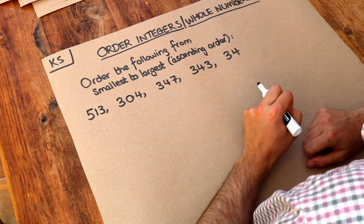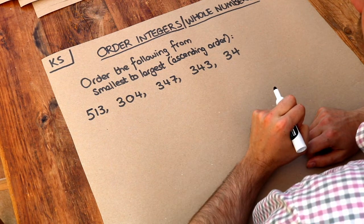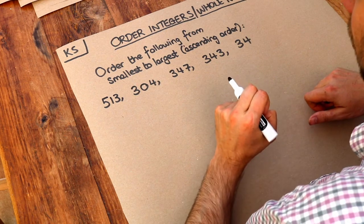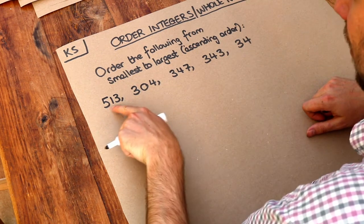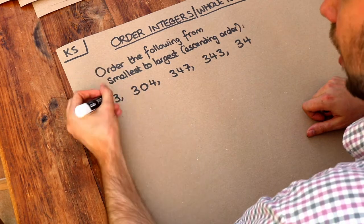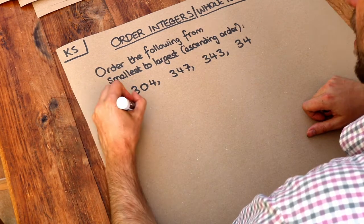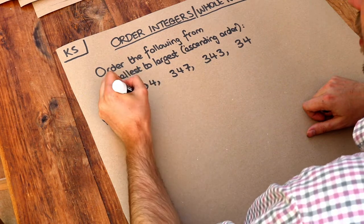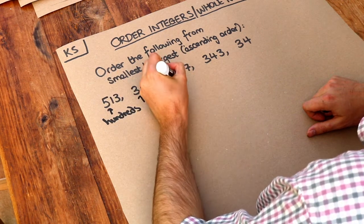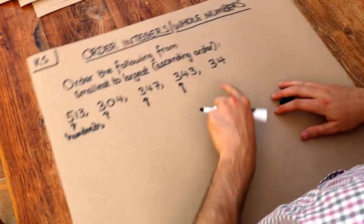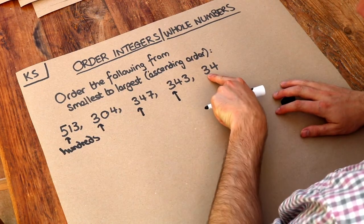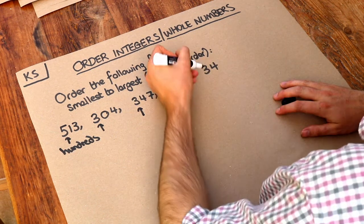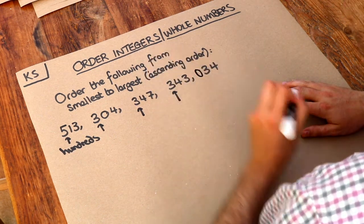In a previous video we looked at the place value of digits, and when we want to order whole numbers we always look at the place value of the highest worth. We can see there are hundreds digits, tens digits, and units digits among these numbers. For one number there's no hundreds digit, but we can think of that as having zero hundreds.